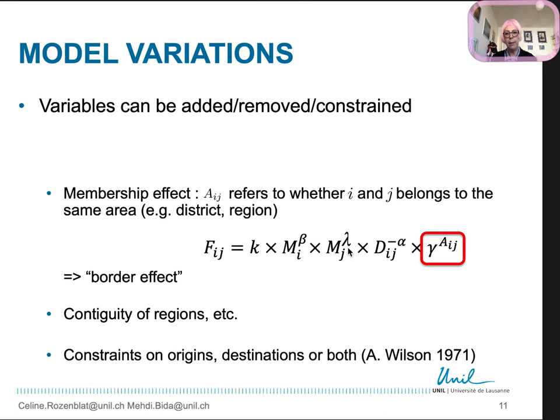The model can be extended in numerous variations. Additional variables can be added to remove constraints. Regarding the distance, we can add the membership to a district, a region, adding parameters of the two entities belonging to the same group of area. It allows, for example, to assess border effect. Distances can be measured by the contiguity of regions between two regions or the length of the mutual borders. One also can add different kinds of constraints: on origin, on destination, or both.